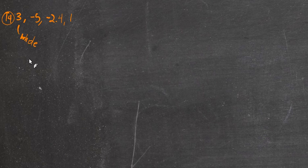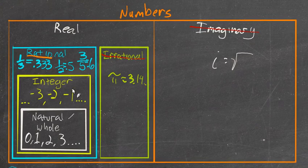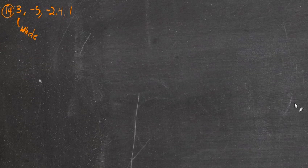Next, they give us a few numbers to look at. Number 14 gives us minus 3, negative 5, negative 2.4, and 1. They want us to decide whether these numbers are whole numbers, integers, or rational numbers. It's a bit of a layered question — let's look at number 3. That's definitely a whole number. Whole numbers are part of the integers, which are part of the rational numbers. We're just narrowing it down to the smallest set each number belongs to.